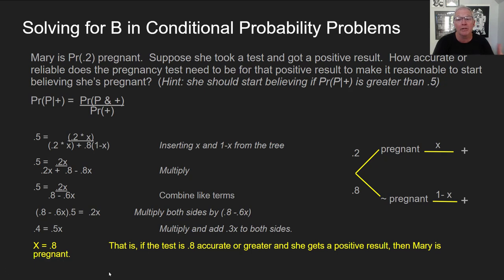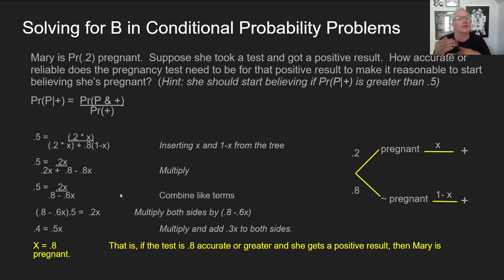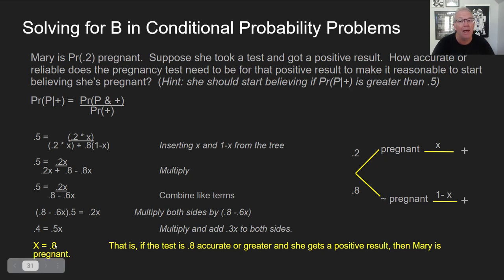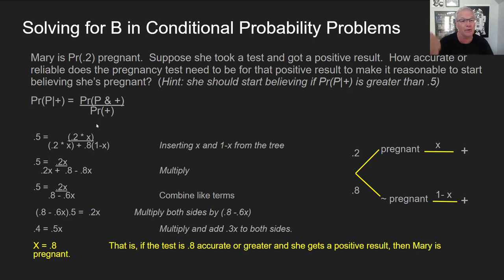Dividing both sides by 0.5 makes the 0.5 go away, and 0.4 divided by 0.5 equals 0.8. So x equals 0.8. We just decided that if the test is 80% accurate or greater and she gets a positive result, then Mary is at least 0.5 likely to be pregnant. If this test accuracy were higher, the belief probability would go higher. 0.5 is the threshold where you start believing things, and we solved for the accuracy of the test at that threshold.